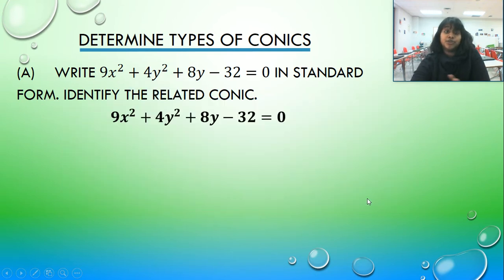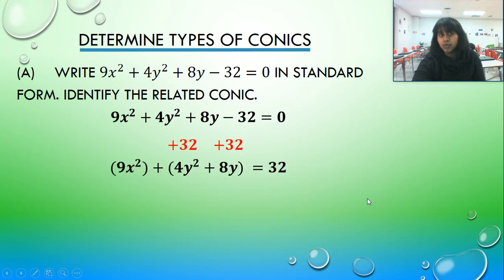So first thing I'm going to do, I notice I've got an x squared and a y squared. Great. So I'm going to group my x's. I'm going to group my y's. And if I've got an extra constant that I don't need, I can move it to the other side. So that's exactly what I did.